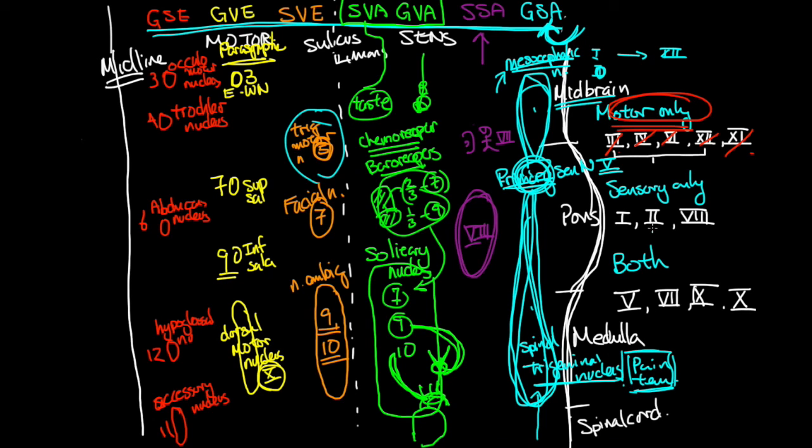Just to add one last bit of information: since this is all a trigeminal nucleus, it wouldn't be surprising that cranial nerve number 5, the trigeminal nerve, fuses in here. But also you get information from 7, 9, and 10. So 5, 7, 9, and 10 all go into this particular region over here.